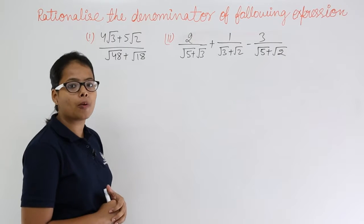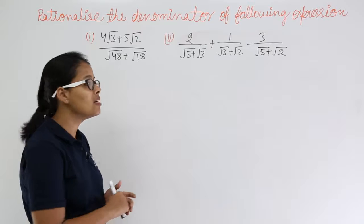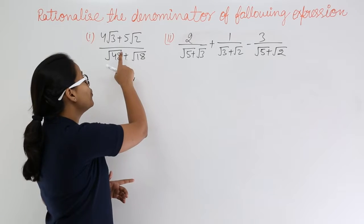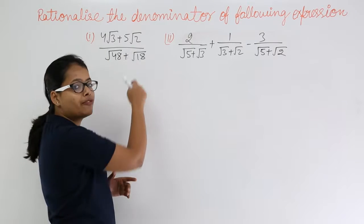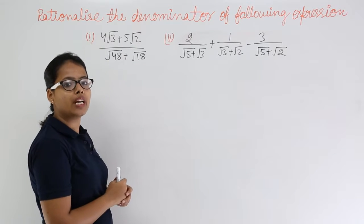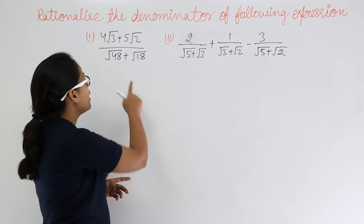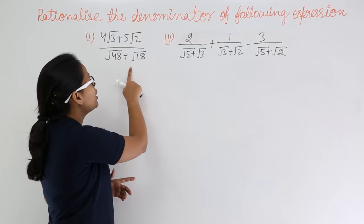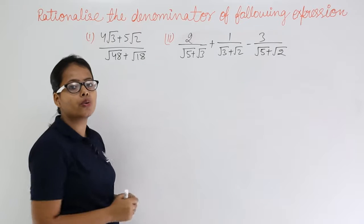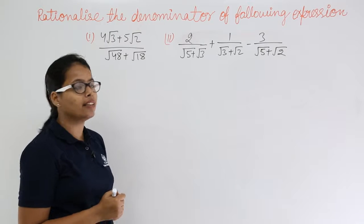Let's take our first problem which is (4√3 + 5√2) divided by (√48 + √18).